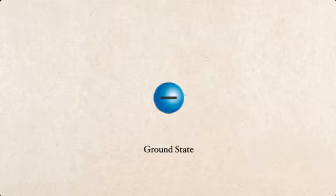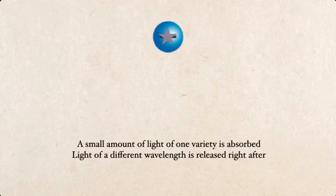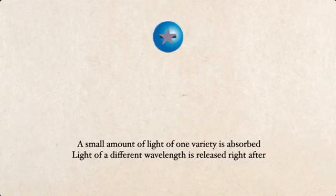Say that something would happen — like some energy would come along. That energy is snaking along and encounters the electron. Under certain circumstances, that electron can then absorb some of that energy. Getting that energy into the electron elevates it to a higher energy level, so it pops up and enters what's called an excited state.